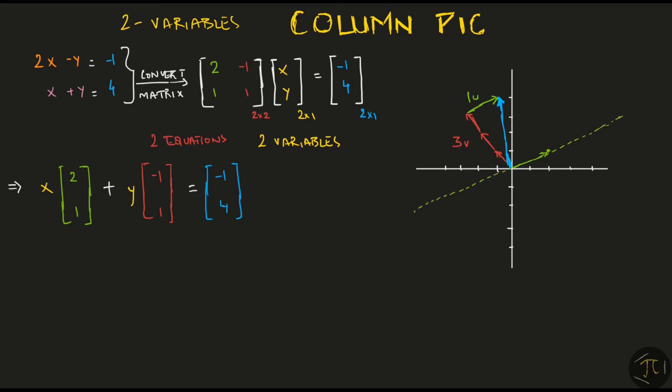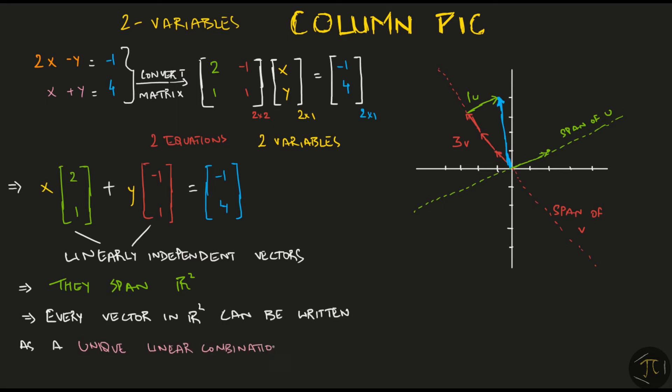Here's something to observe though. The vector v doesn't lie on the line spanned by u and u doesn't lie on the line spanned by v. So, these are linearly independent vectors. And two linearly independent vectors in R2 must span R2. And by definition, every vector in R2 can now be written as a unique linear combination of these two vectors.